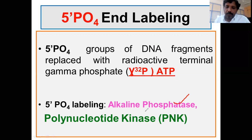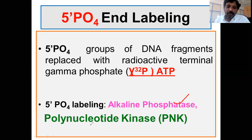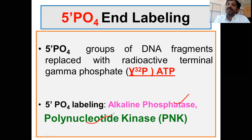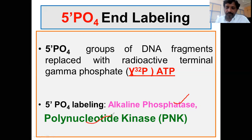Once alkaline phosphatase removes the phosphate groups from the 5'-prime end, it forms a 5'-prime OH. The second enzyme, T4 polynucleotide kinase, can transfer the terminal gamma phosphate of ATP to the 5'-prime OH of DNA fragments — that is nothing but phosphorylation. This is the whole process of 5'-prime phosphate end labeling. In the next slide we'll see the flowchart.